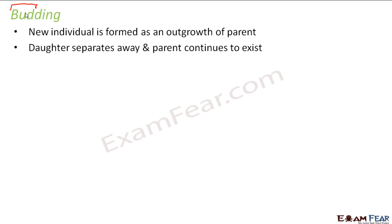In the case of fission, after fission takes place, the parent was dying because the parent itself was breaking to form new organisms. But in budding, even after the daughter organism is formed, the daughter will also exist and the parent will also exist. So on the parent body, there will be a small outgrowth which we call a bud. That bud will grow, and when it becomes mature, it will separate from the parent's body.